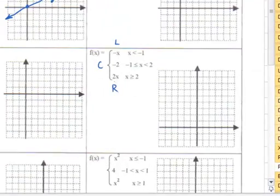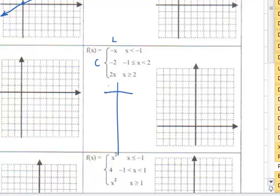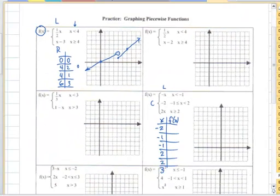Next, we have a function with three pieces, so I'm going to make a table and fill in the proper values. I'll just pause it while I do it. I'm back — I want to make my table, and I have the points that I'm going to plot for the left function, for the center function, and for the right function.